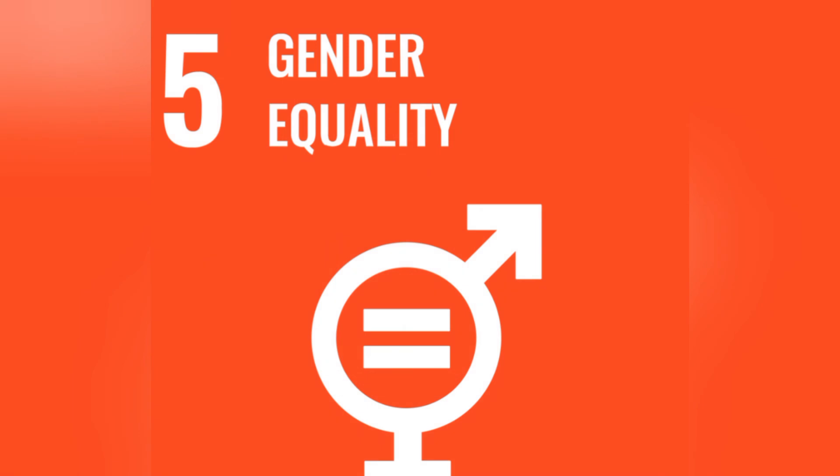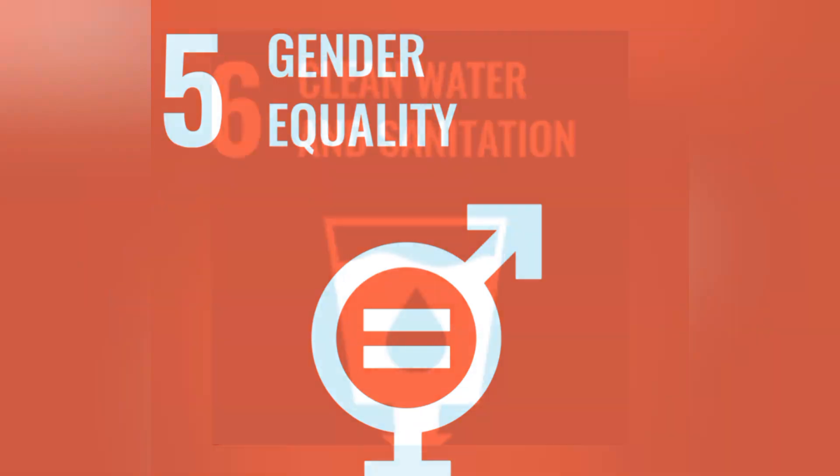Goal number five, gender equality. The outcome targets: ensuring full participation of women in leadership and decision making, ensuring access to universal reproductive rights and health. The implementation targets: promoting empowerment of women through technology, adopting and strengthening policies for gender equality and supporting legislation to enforce it.